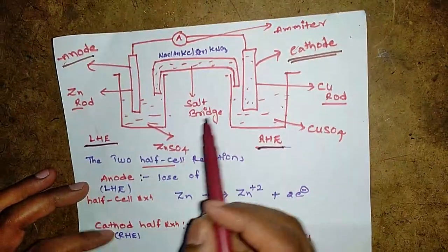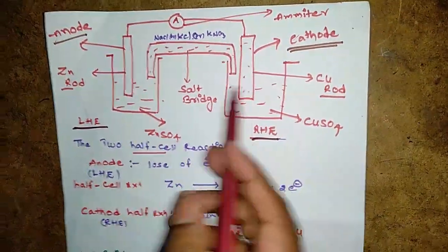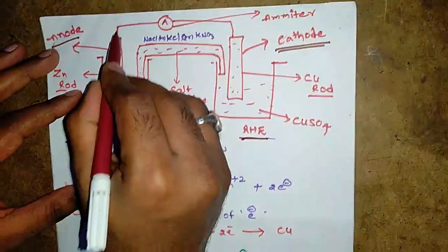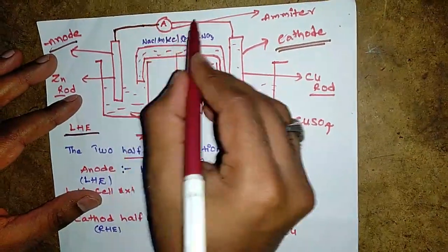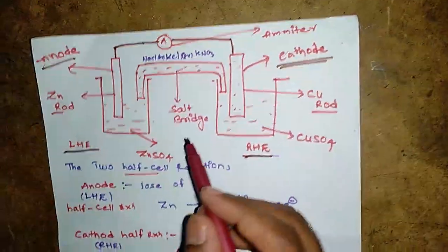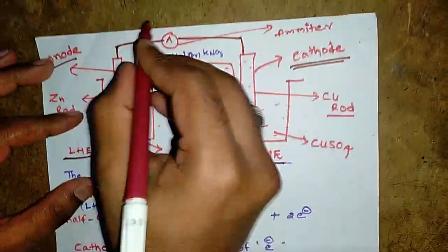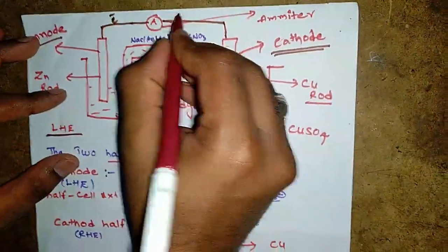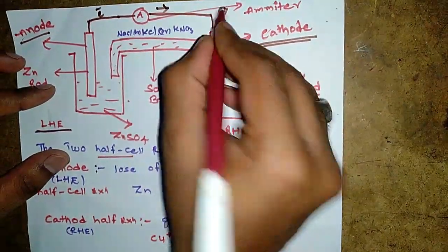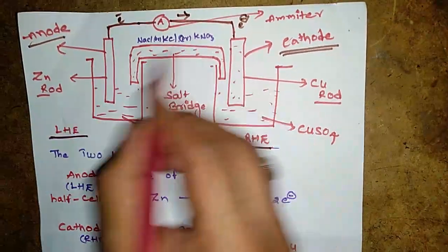The salt bridge is used to prevent the intermixing of both solutions. When you connect the anode electrode and the cathode electrode, it shows the electron flow from the anode to cathode.